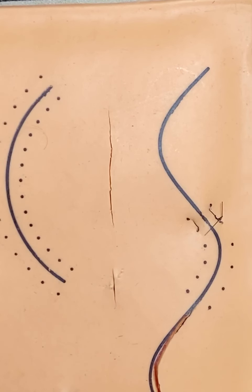This suturing technique is called a baseball stitch. It's basically multiple simple interrupted stitches in a row that span the length of an entire incision.